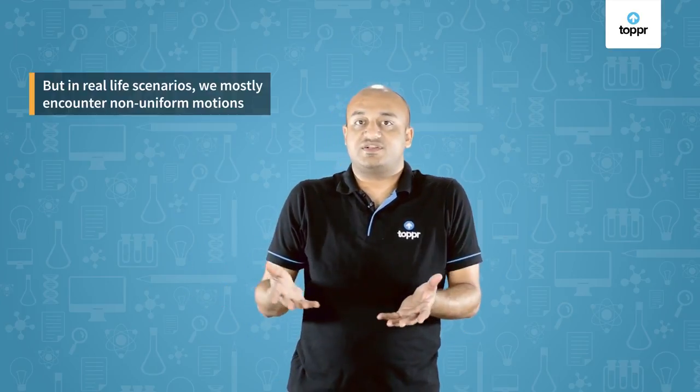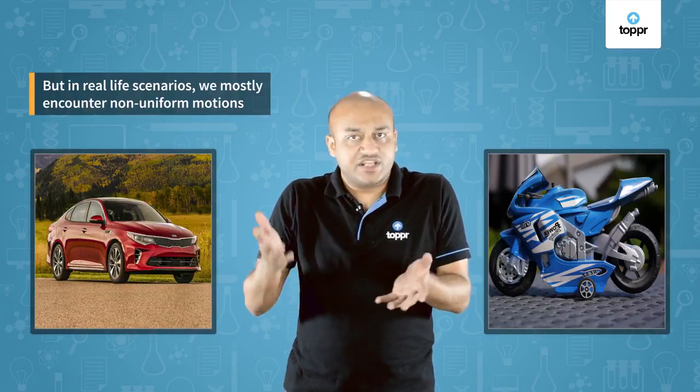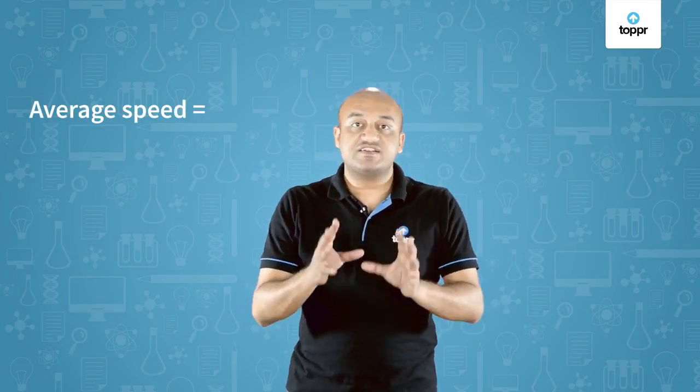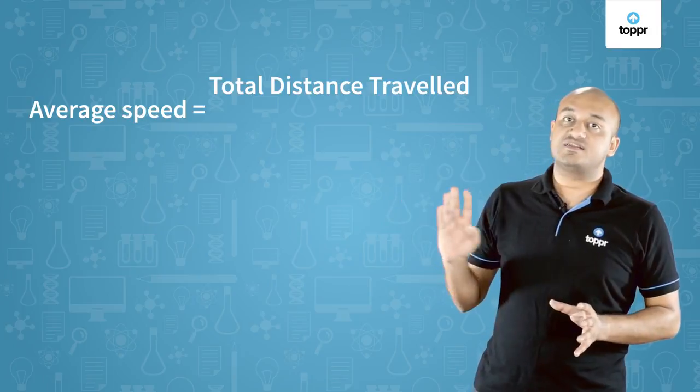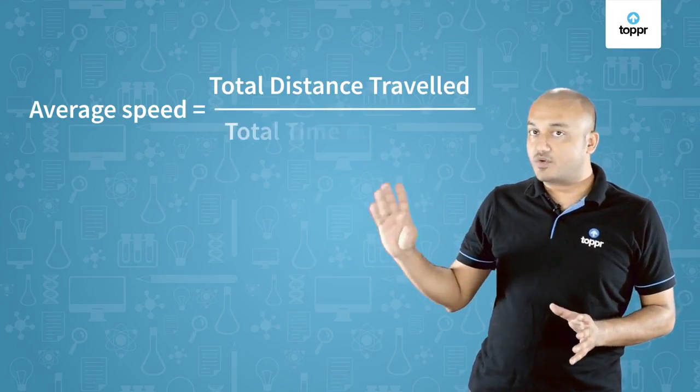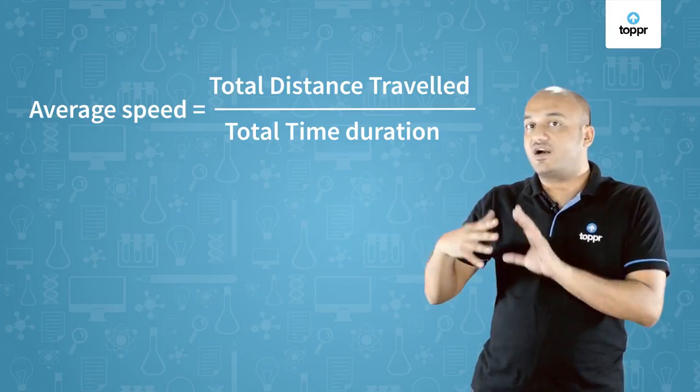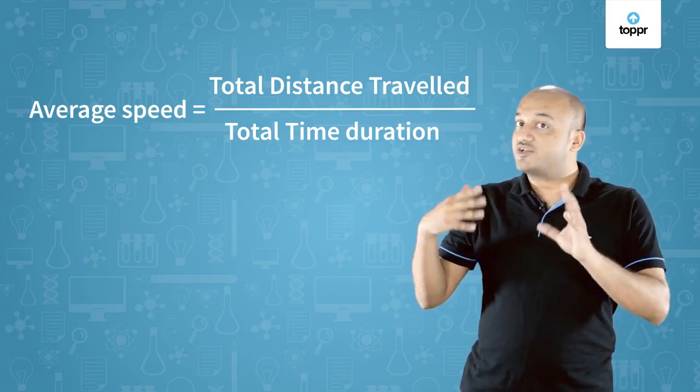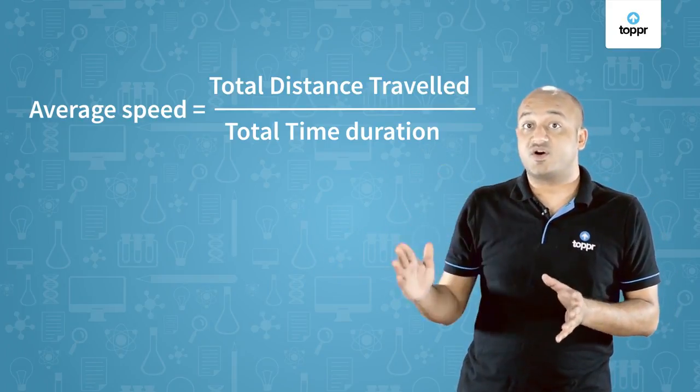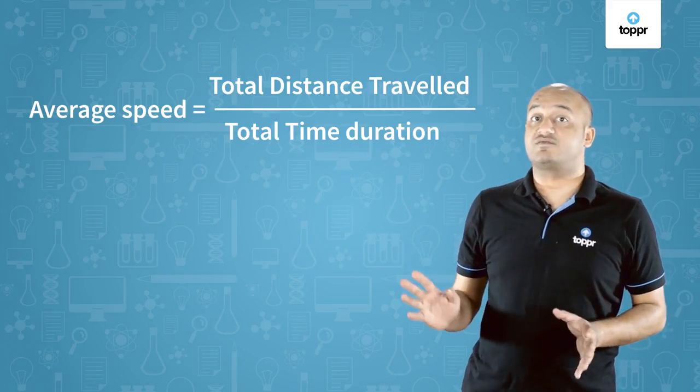In daily life, most objects around us — like bikes and cars — deal with non-uniform speed, as we keep varying their speeds. So in order to deal with such practical situations and understand the motion of such movements, we have a simpler term called average speed. The formula for average speed is total distance traveled divided by total time duration. It does not matter how big the time duration is or if the speed is going up and down — even for non-uniform motion you can use this formula.